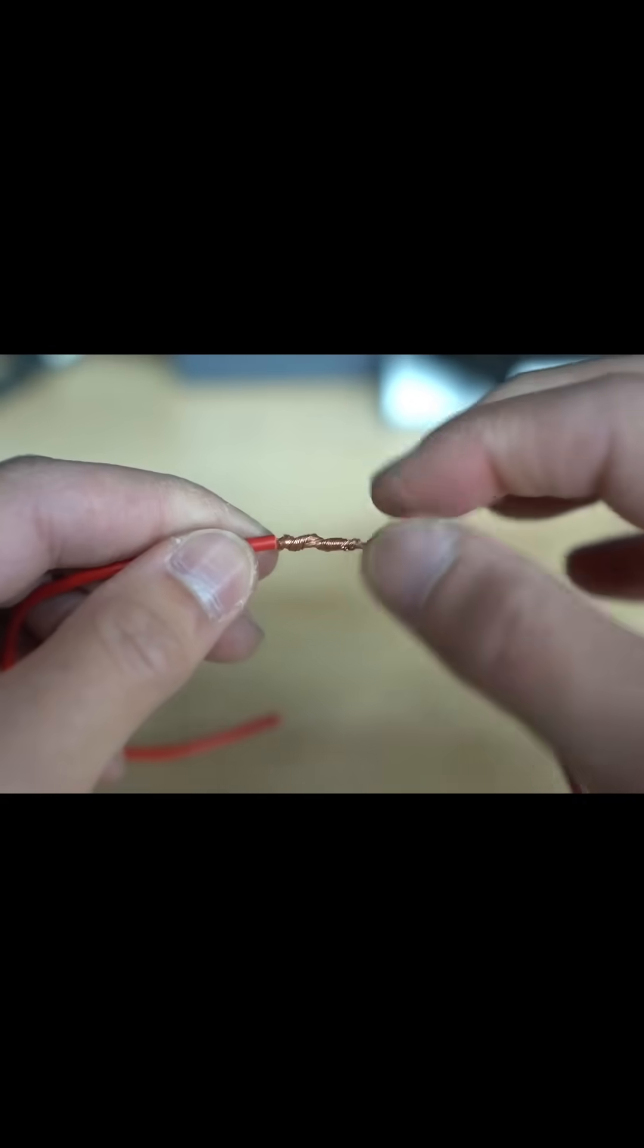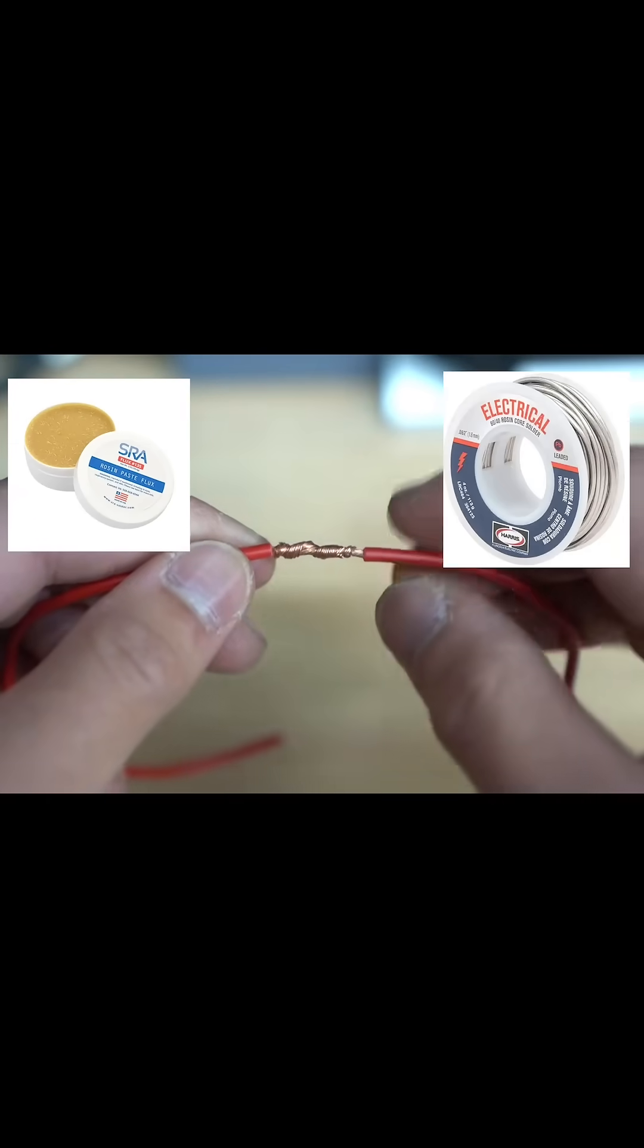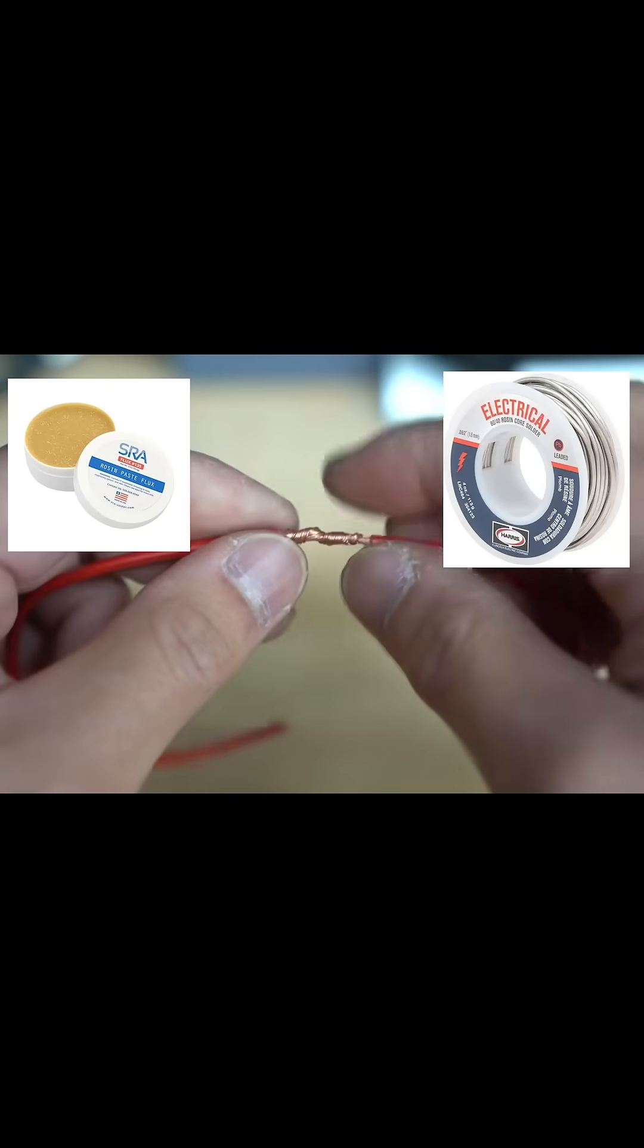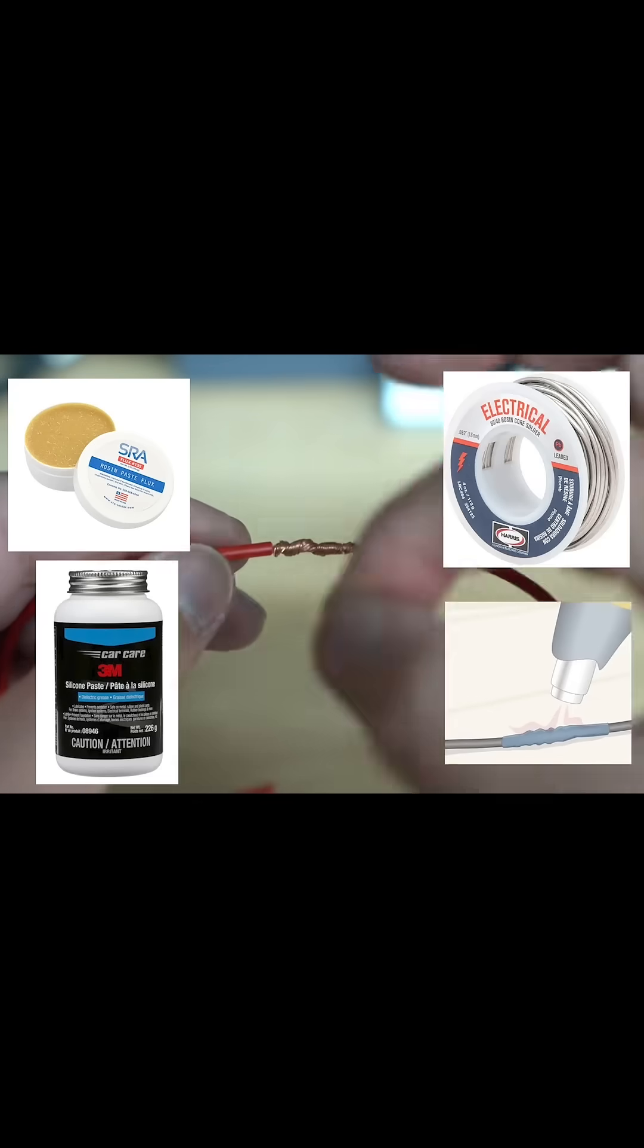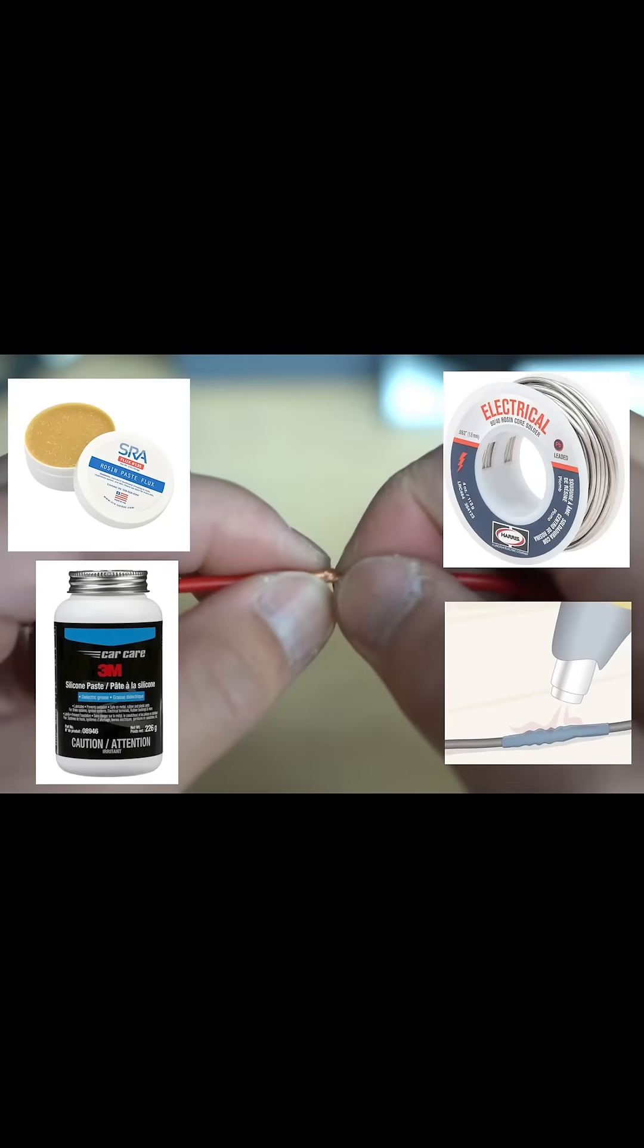Once that's done you're going to put flux over it. You're going to solder with the 60-40 and once that's done we're going to put the silicone paste over for waterproofing. Then you slide that sleeve and then we can go and shrink wrap that.